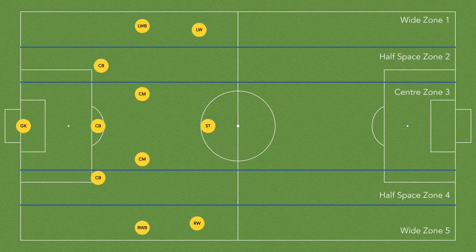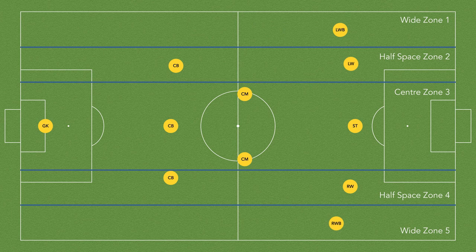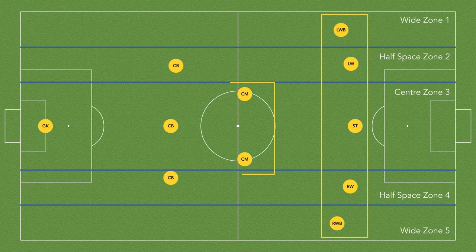Our starting formation for the second method is the 1-3-4-3. The second way that we can create this shape is to use inside forwards. In this example our wide players will occupy zones 2 and 4, which allows the fullbacks to play more natural roles and maintain the width in zones 1 and 5. This is now our front 5 created. This formation naturally creates the midfield 2 and the defensive line 3, so our shape is complete.